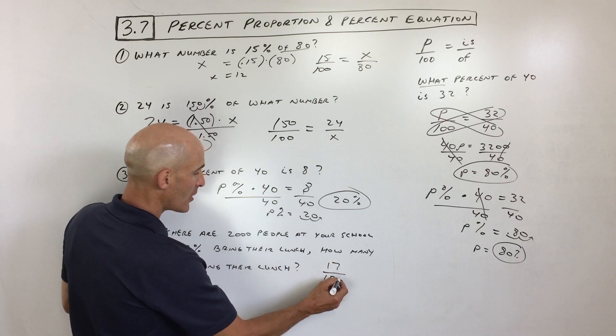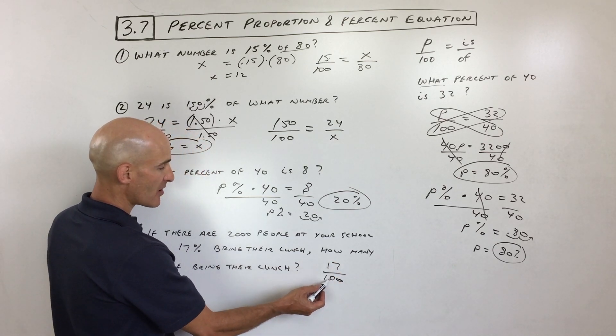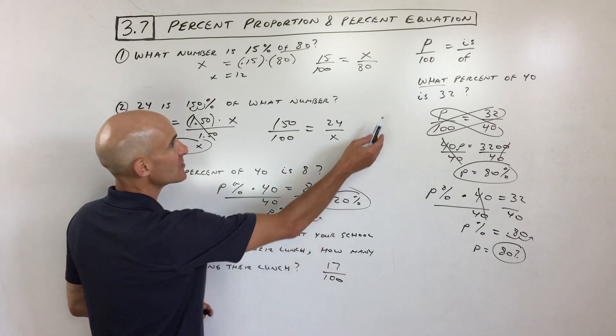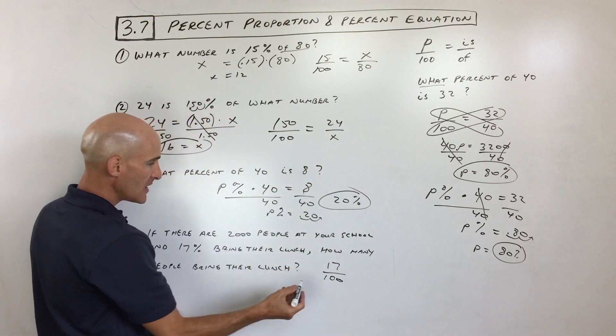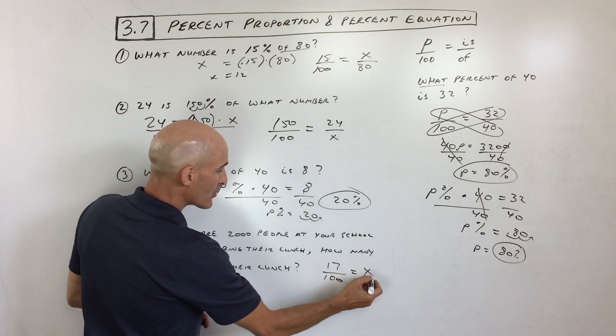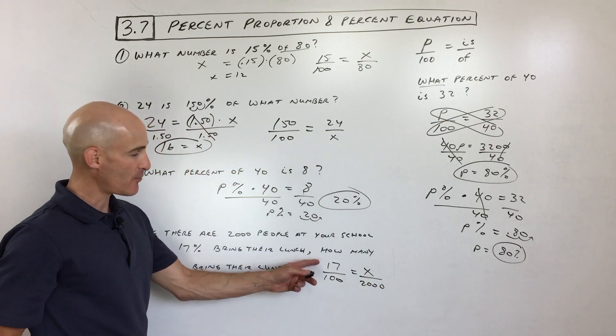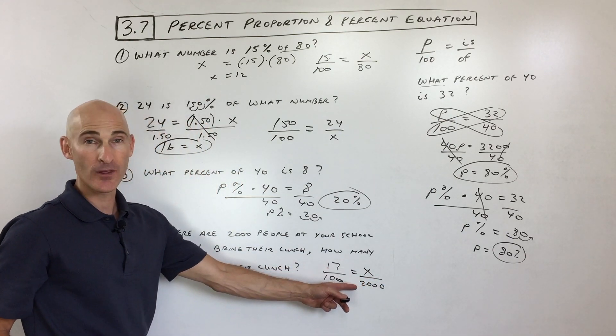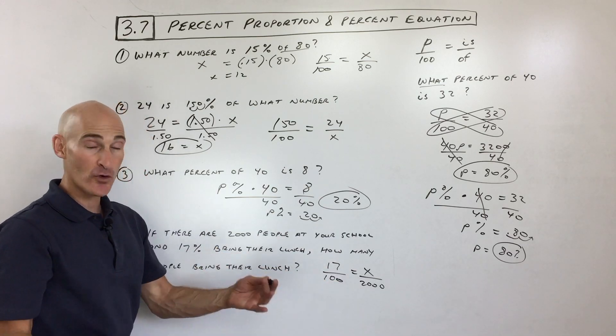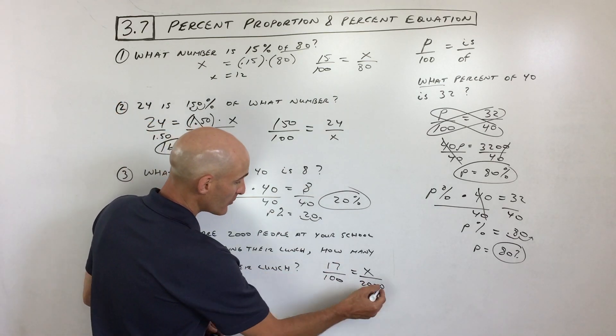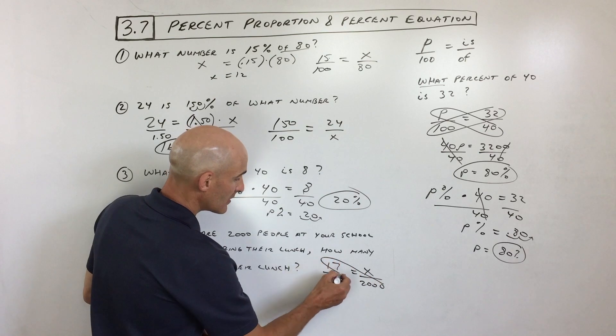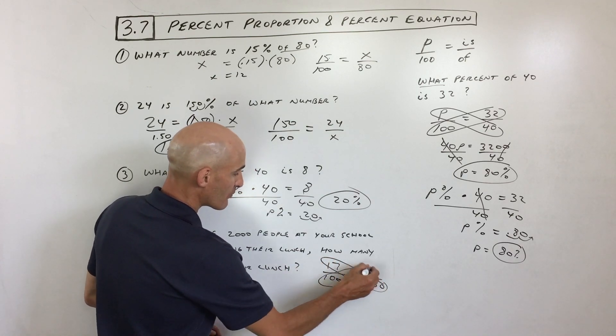So 17 parts out of 100, that's 17%. 17 parts, 70%. Okay, right? That's this equation here, P over 100, is how many bring their lunch out of the total 2,000 students. See, part out of whole equals part out of whole. That ratio is equal to that ratio. It forms a proportion. We cross multiply and solve, right? So we get that product equals that product, right?